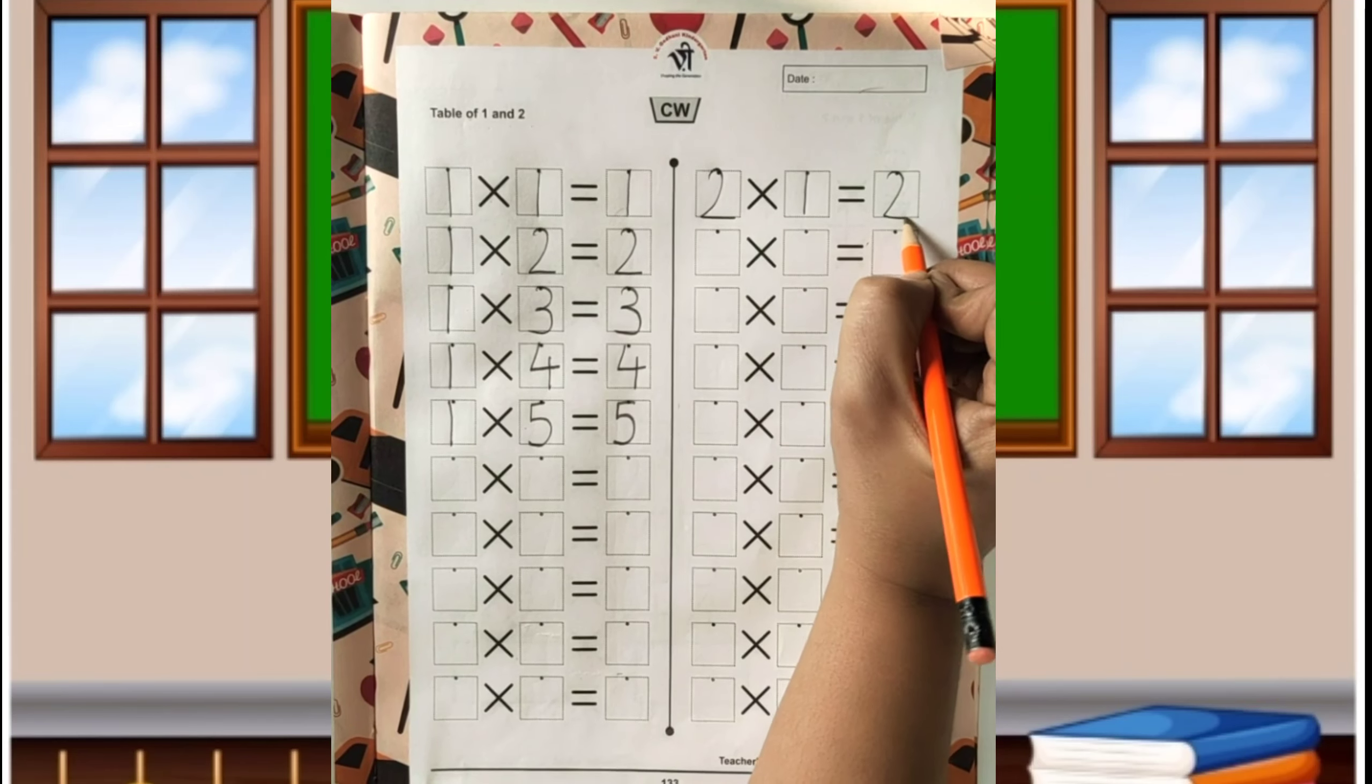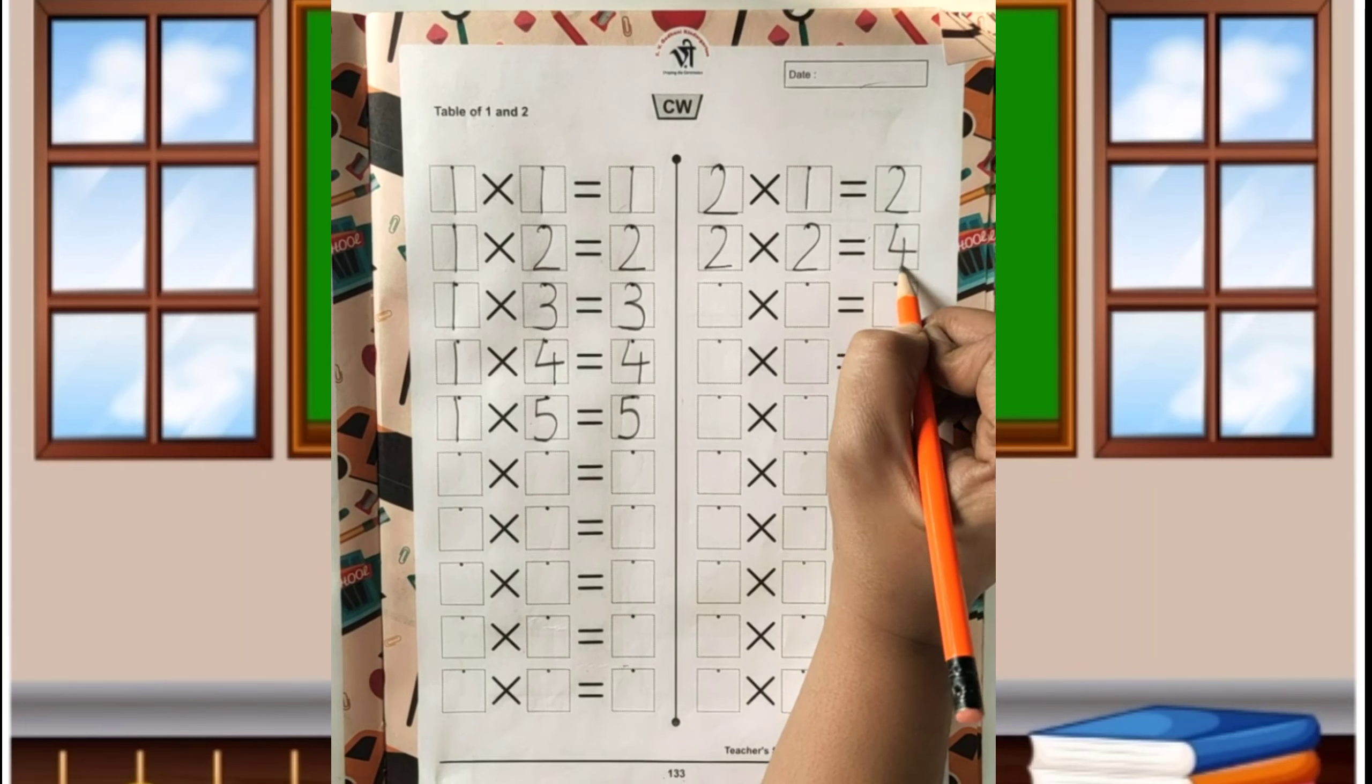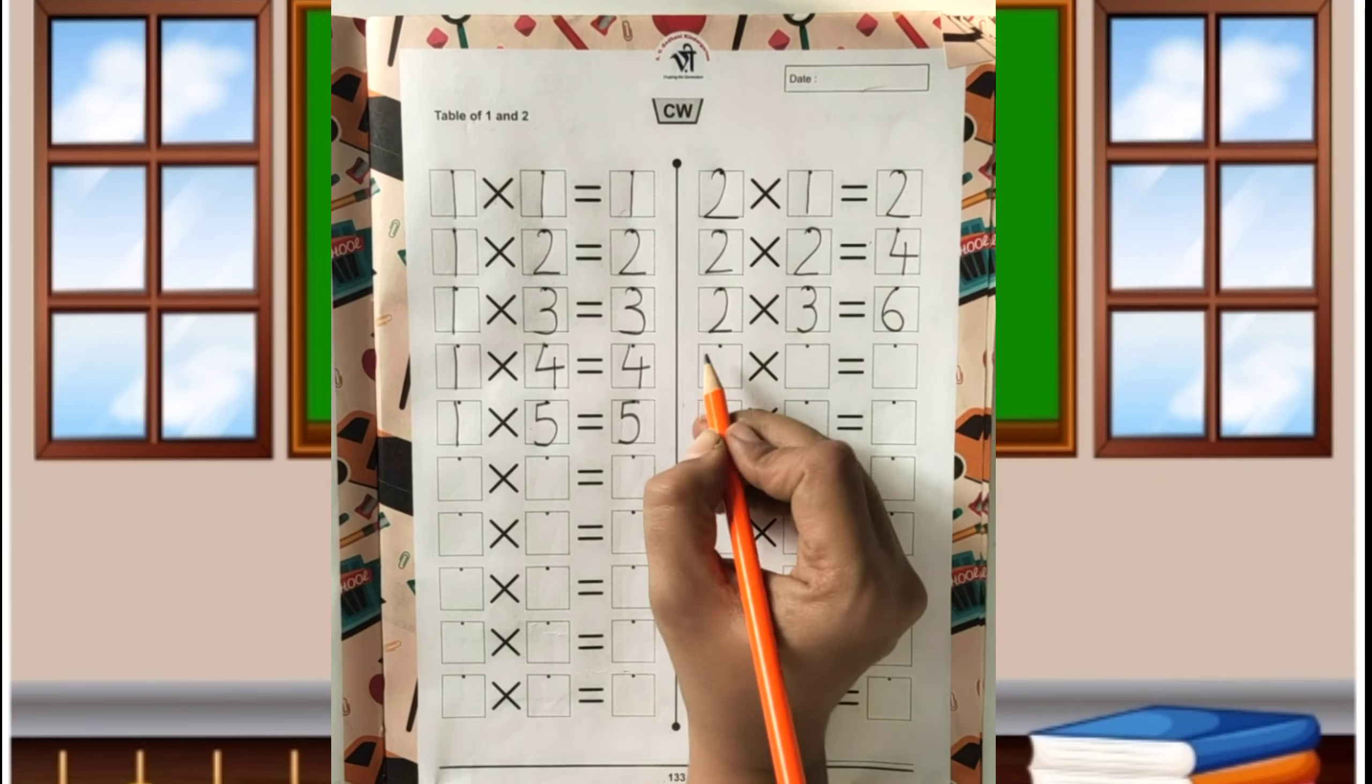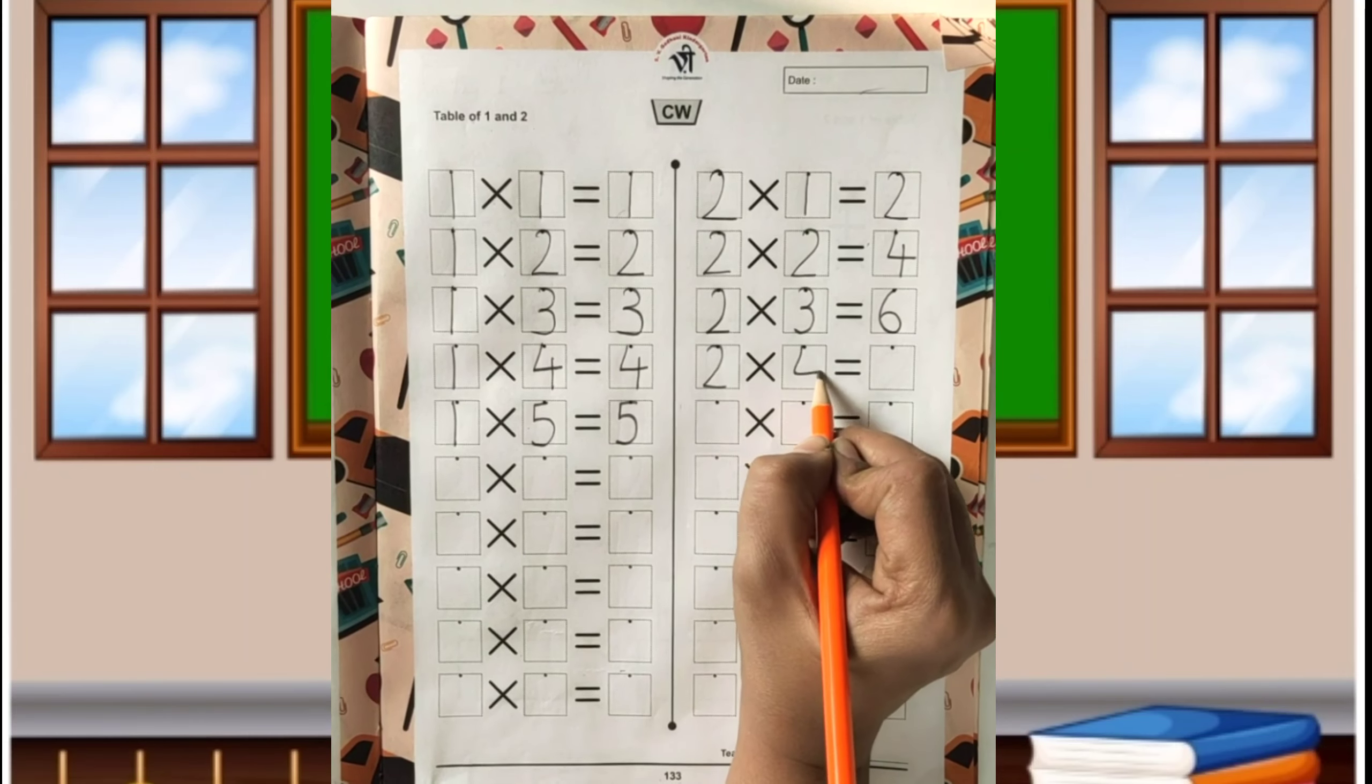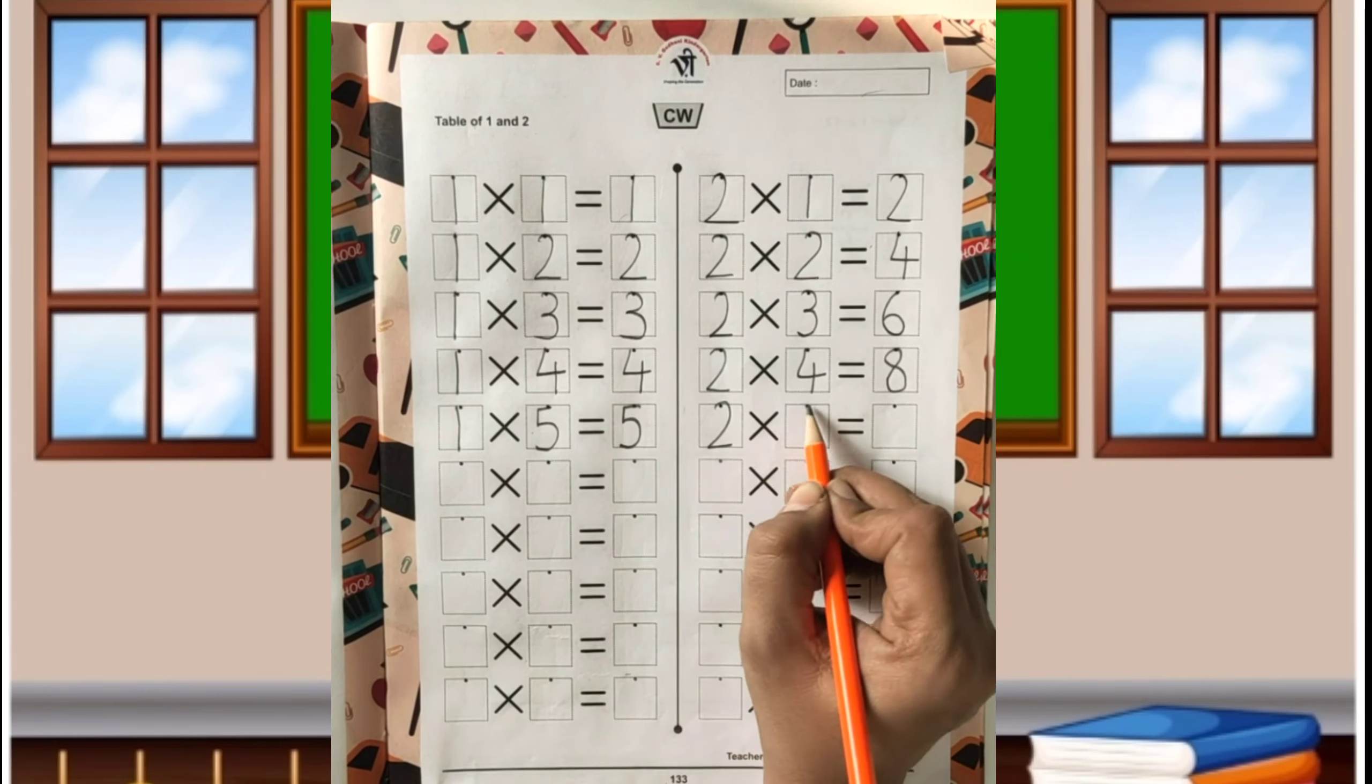Two, one's are two. Two, two's are four. Two, three's are six. Two, four's are eight. Two, five's are ten.